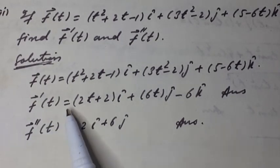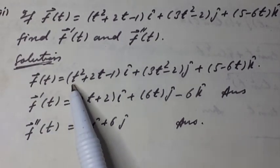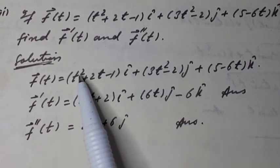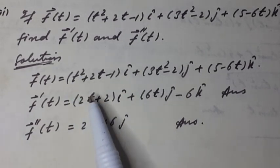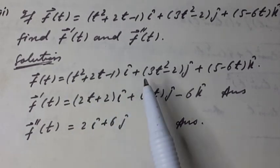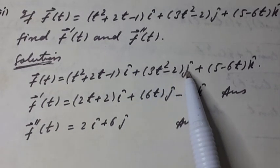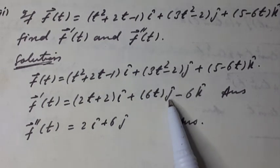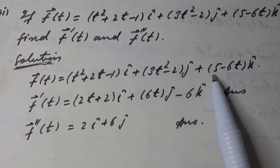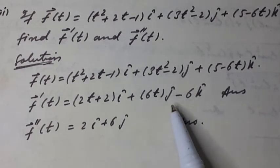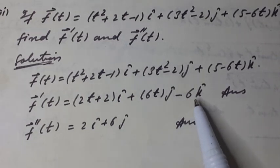First derivative: f'(t) is equal to the derivative of the coefficient of î, which is (2t + 2) î, plus the derivative of the coefficient of ĵ, which is 6t ĵ, plus the derivative of the coefficient of k̂, which is −6 k̂.